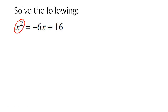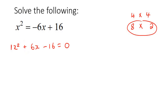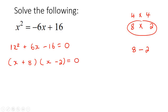Here's our next example. As soon as you see a quadratic term, take everything to one side — bring the 6x and the 16 over. That gives us a trinomial where the number in the front is a 1, so we look at 16: 8 times 2, or 4 times 4. Using 8 and minus 2 gives positive 6. So we make two brackets: (x plus 8)(x minus 2) equals 0. Then x plus 8 equals 0, or x minus 2 equals 0, giving x equals negative 8 or x equals 2.